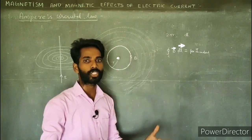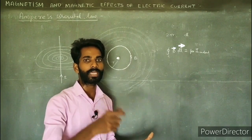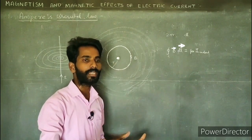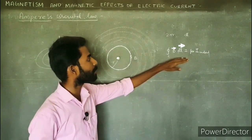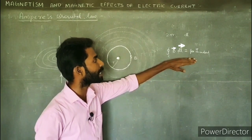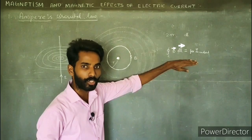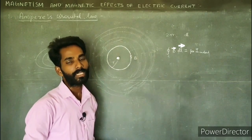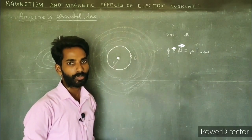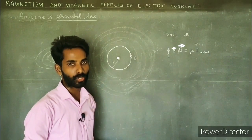Whatever the shape may be, we can apply the line integral. That is why we can use the Ampere circuit to calculate the magnetic field. Thank you.